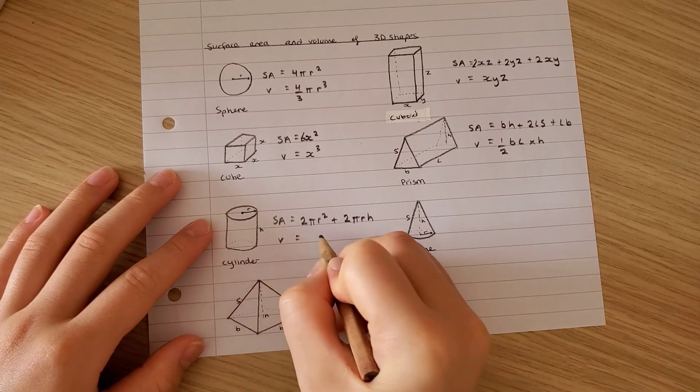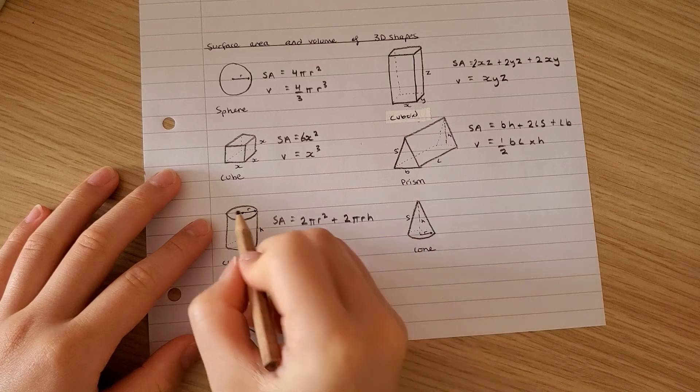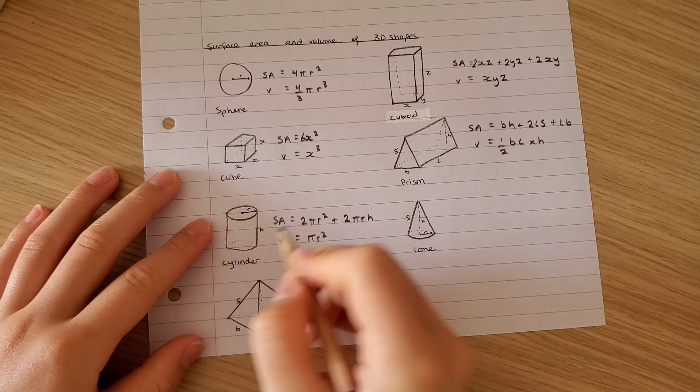For the volume, it equals pi r squared, which is one of those, and you multiply by the height.